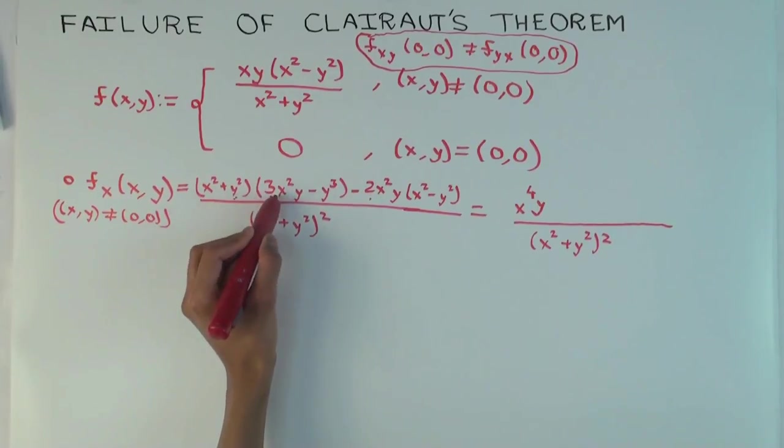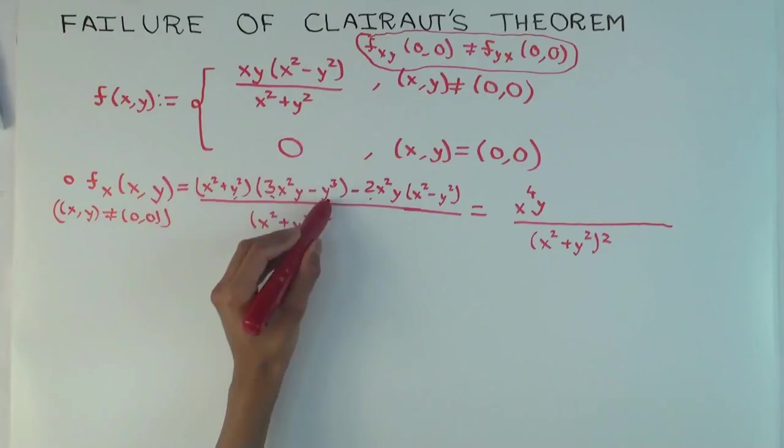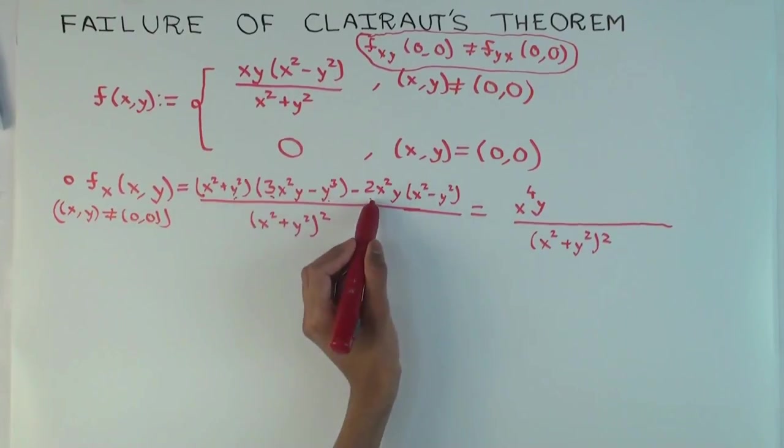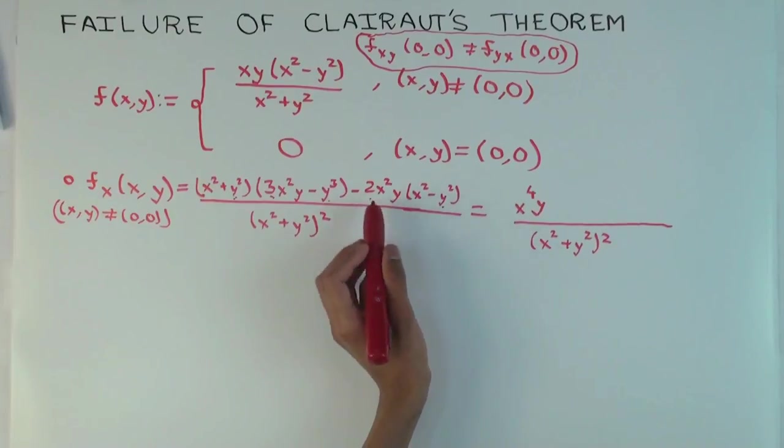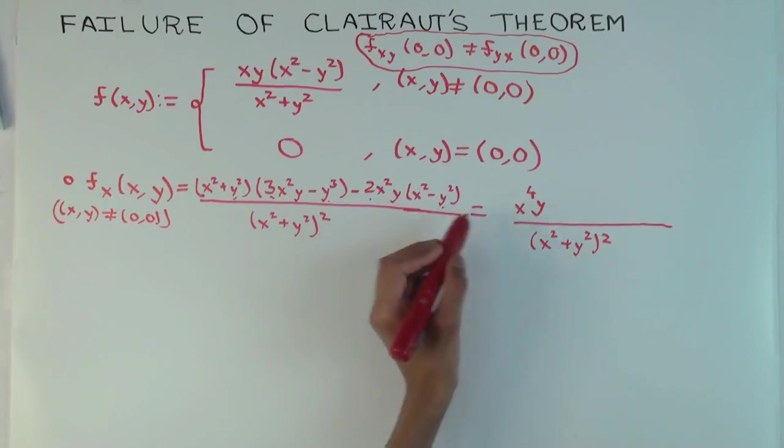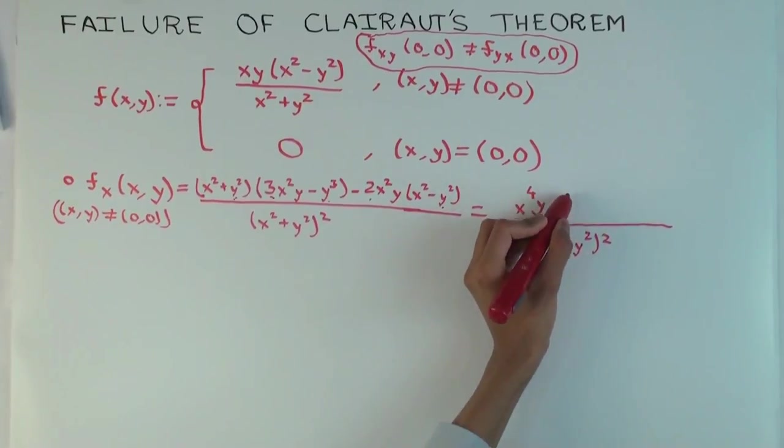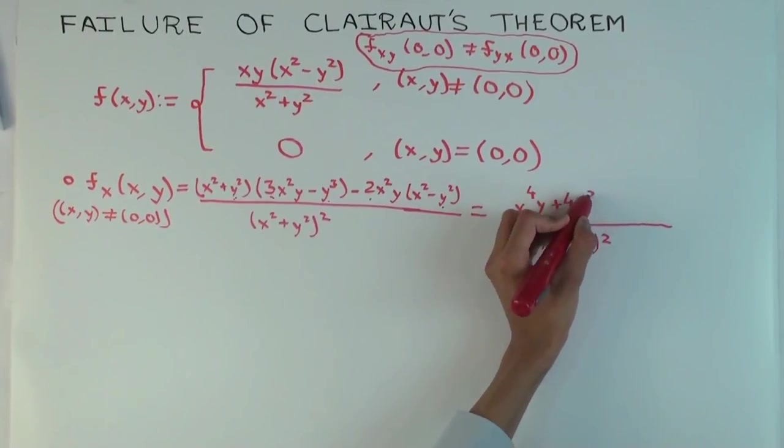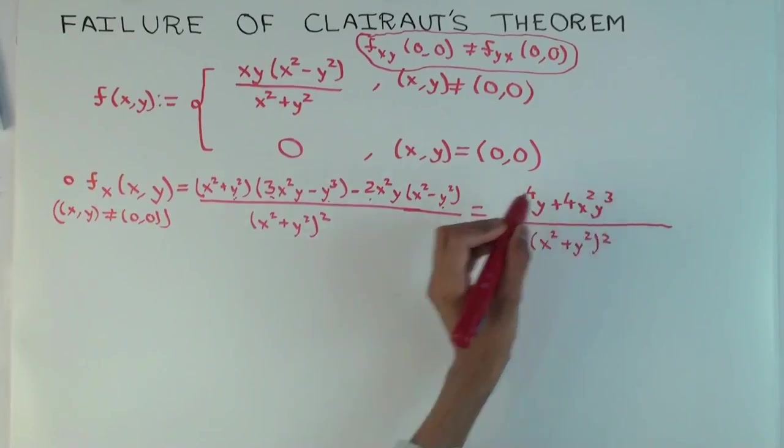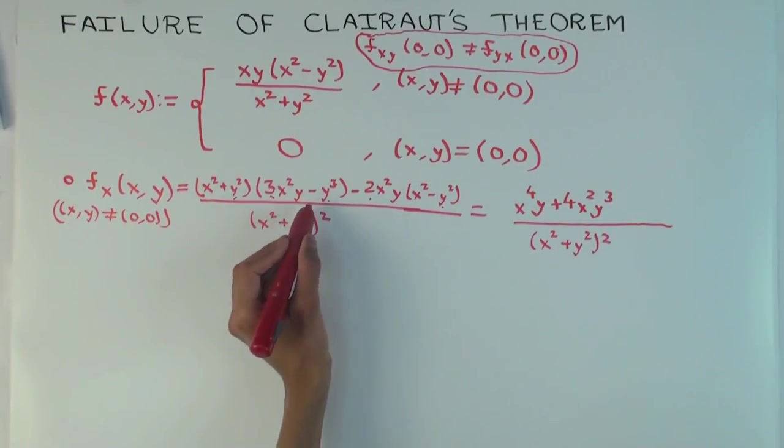You will get a coefficient of minus 2 from here. Okay, there is nowhere else where you get x to the 4y. So, 3 minus 2 is 1. So, you get x to the 4y. Okay. What about x squared y cubed? You also have two terms. Well, you have three terms. You have this times this, which will give you a plus 3. You have this times this, which will give you a minus 1. And then you have this times this, which gives you a plus 2. A plus 2, yes. So, you get plus, what, 4.